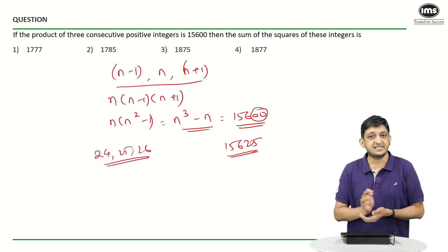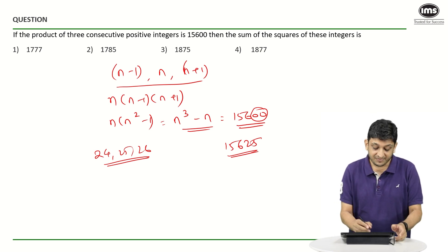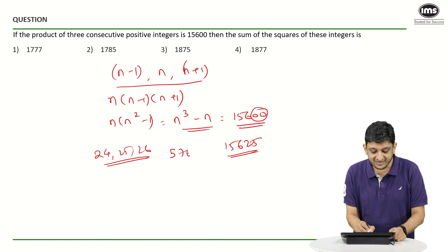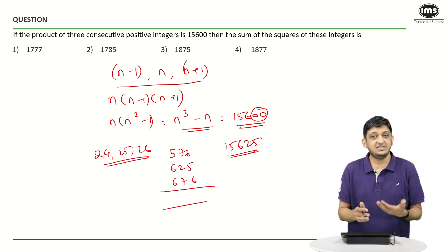Now what is the sum of squares of these integers? Very easy. Square of 24 is 576, square of 25 is 625, square of 26 is 676.